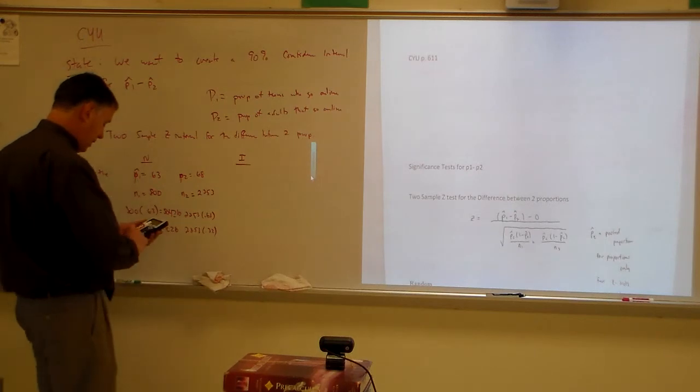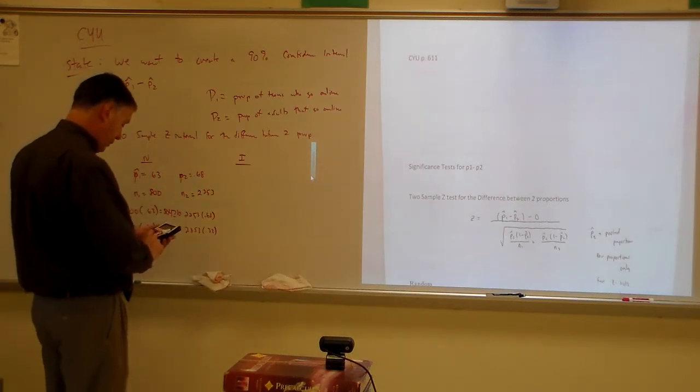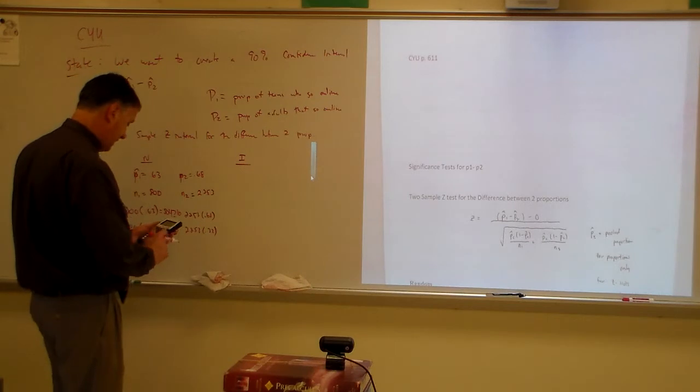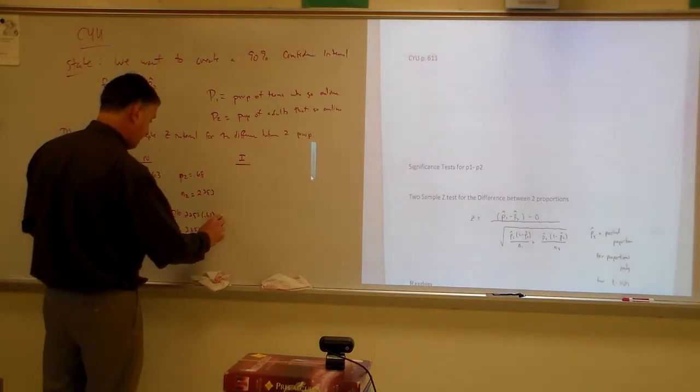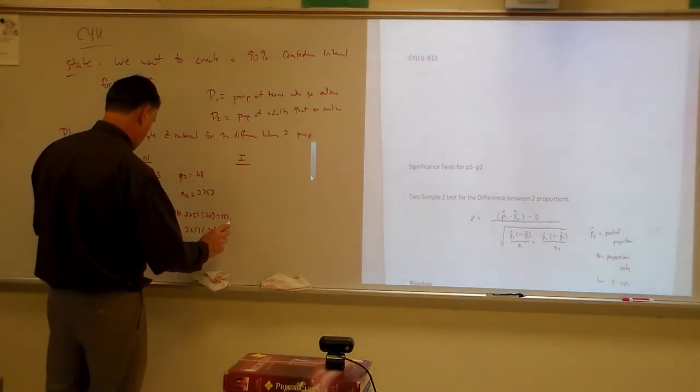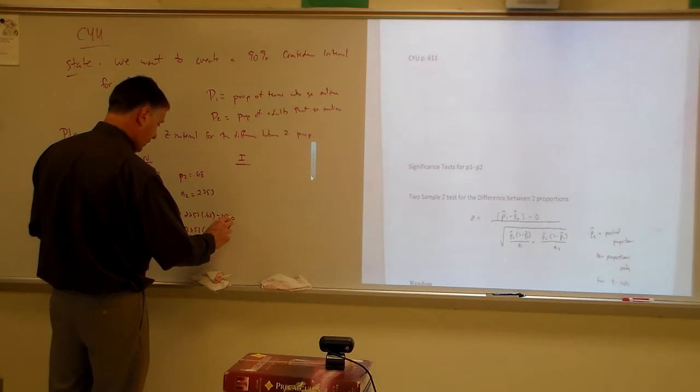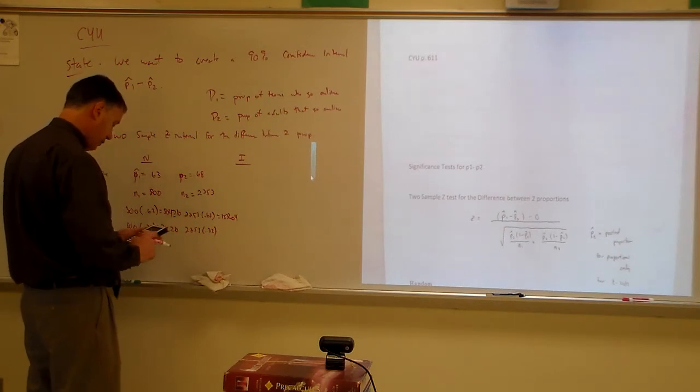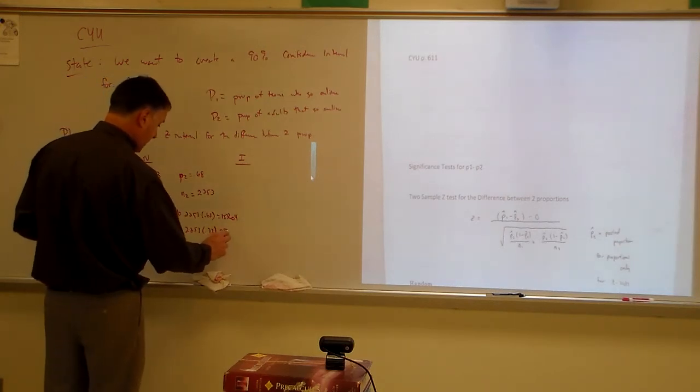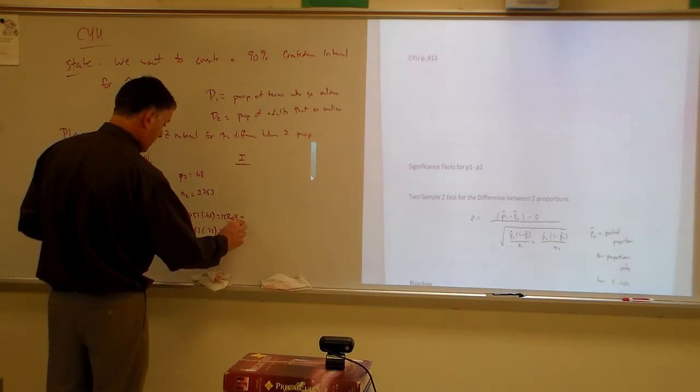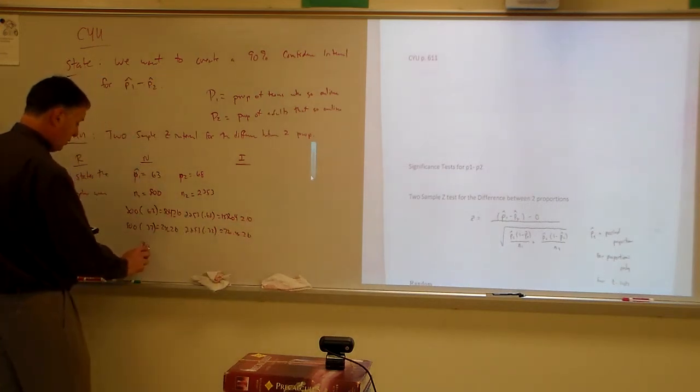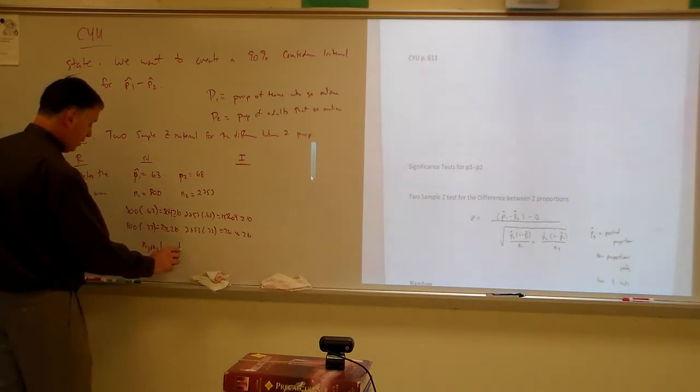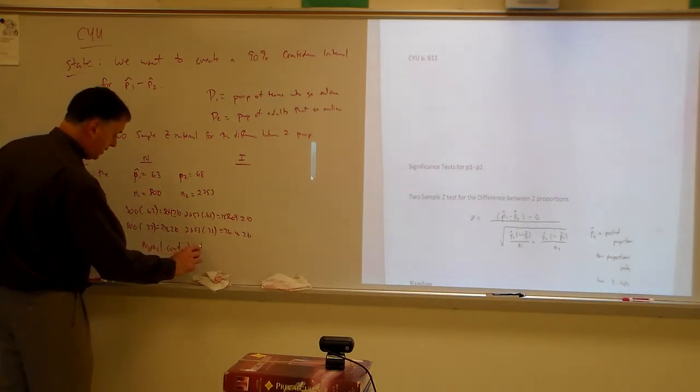Both of those are greater than our angle of 10. We like that. And then we go 2,253 times 0.68, and I get 1532.04. 2,253 times 0.32 - 720.96. Guess what? Both greater than or equal to 10. Normal condition is satisfied.